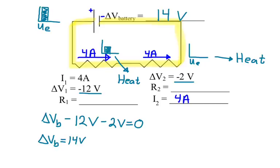A volt is a joule per coulomb, so a coulomb of charge exiting the battery would have 14 joules of energy. After going through the first resistor, it would have lost 12 joules of energy, leaving only 2 joules remaining. They then lose 2 more joules going through the second resistor, so their energy returns to zero. The big idea is that around the loop, the net voltage has to equal zero.